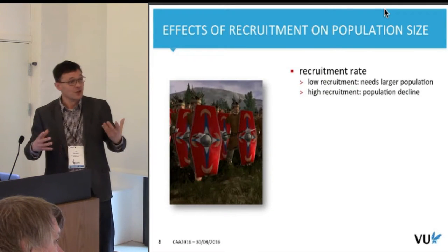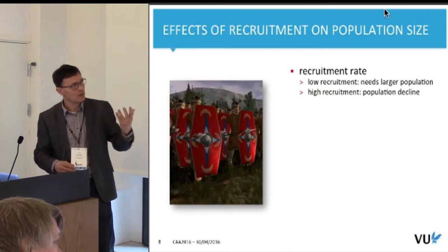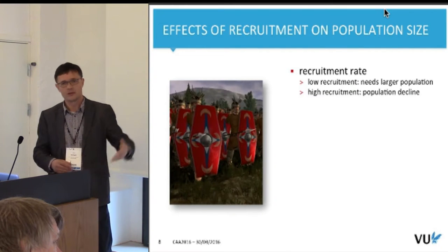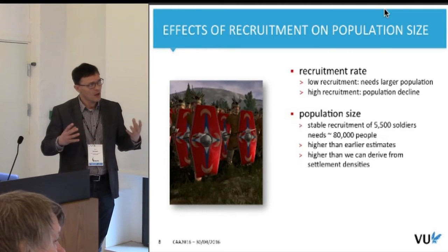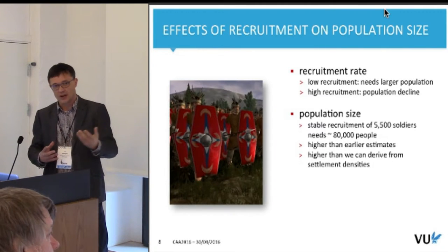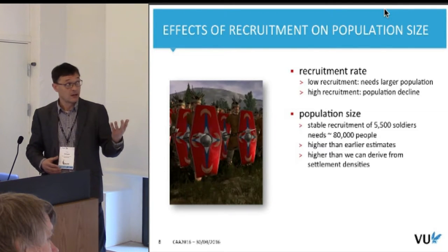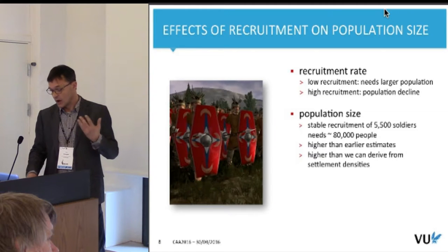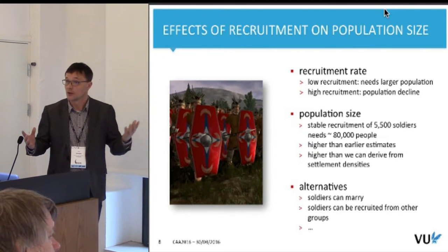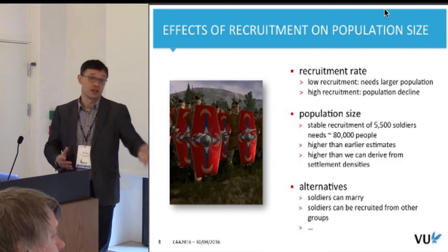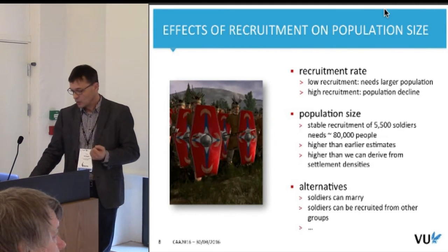That's what we got out of that, which offers some results and some questions. The low recruitment rate needs a larger population; with a high recruitment rate, you see a population decline. All in all, a stable recruitment of the kind we are talking about would need about 80,000 people — which is higher than people thought before and higher than what we can derive from settlement density. So there may be something else going on, which is actually what we set out to figure out.